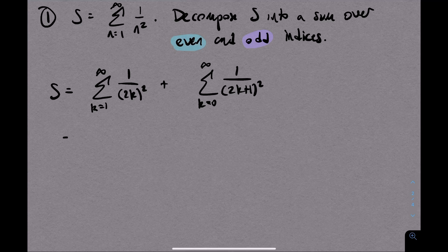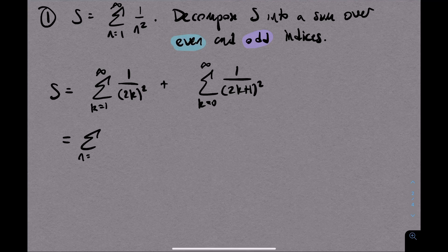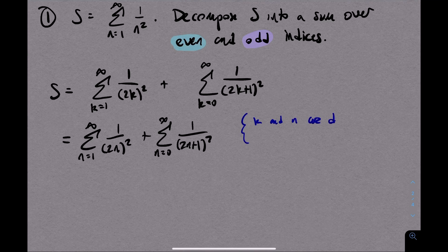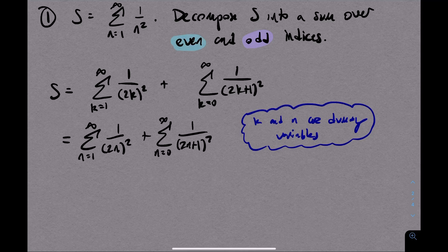Now the next thing I'll observe is that k is just a dummy variable. And now that I've decomposed this sum, I can rewrite it using n instead. The reason I want to do that is because eventually I'm going to relate something in this new decomposition to the original sum that we started with.